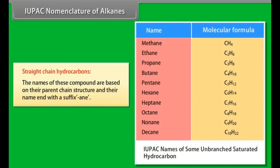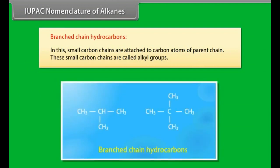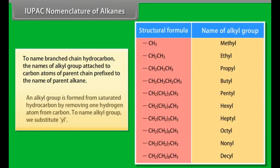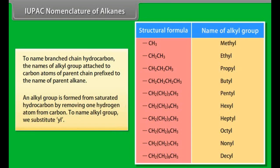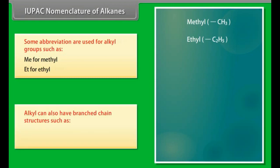IUPAC nomenclature of alkanes — straight chain hydrocarbons: the names of these compounds are based on their parent chain structure and end with the suffix -ane. Branched chain hydrocarbons have small carbon chains attached to the carbon atoms of the parent chain; these small carbon chains are called alkyl groups. An alkyl group is formed from a saturated hydrocarbon by removing one hydrogen atom from carbon. To name alkyl groups, we substitute -yl. Abbreviations used include Me for methyl and Et for ethyl. Alkyl groups can also have branched chain structures such as isopropyl and tert-butyl.